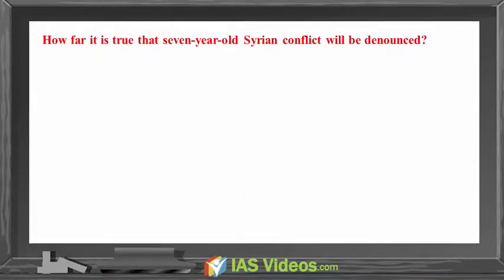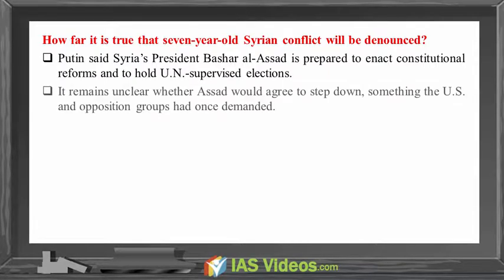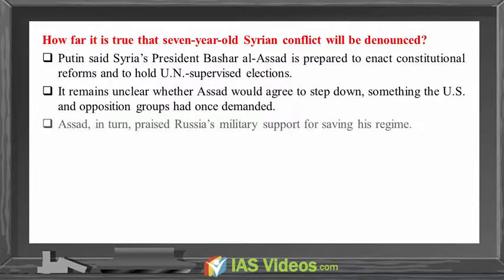How far is it true that the 7-year-old Syrian conflict will be denounced? Putin said Syria's President Bashar al-Assad is prepared to enact constitutional reforms and to hold UN-supervised elections. It remains unclear whether Assad would agree to step down, something the US and the opposition groups had once demanded. Assad, in turn, praised Russia's military support for saving his regime.